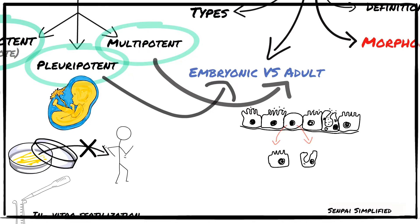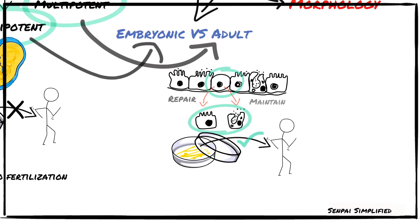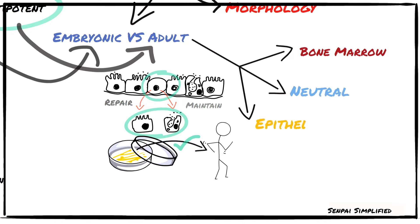Adult stem cells are multipotent stem cells — undifferentiated cells found among differentiated cells in a tissue or organ. Their role is to maintain and repair tissues, but they are limited to differentiating into cell types of their tissue origin. Adult stem cells have a low rejection rate, unlike embryonic stem cells.